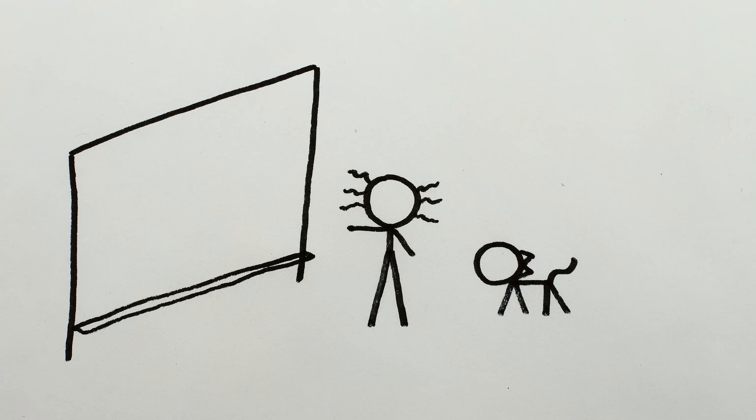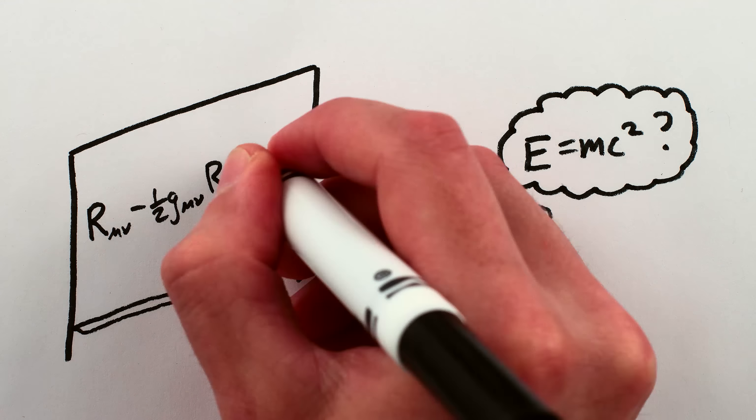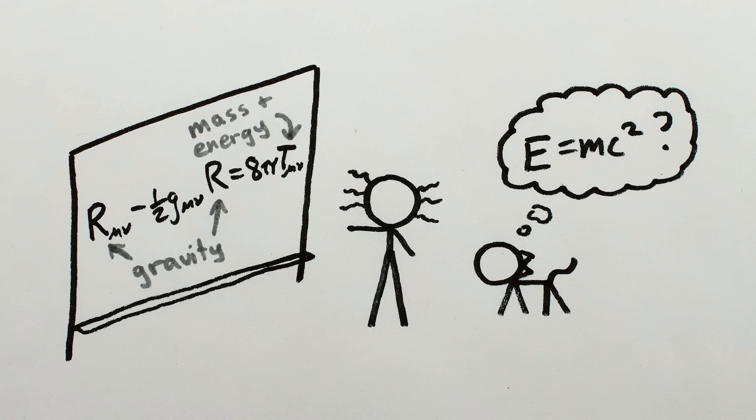In 1915, Albert Einstein published a very important equation. No, not that one. The one he published didn't just relate mass and energy, but mass, energy, and gravity.